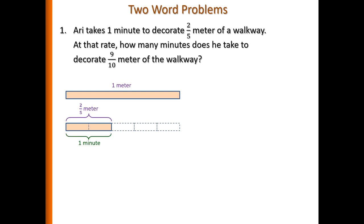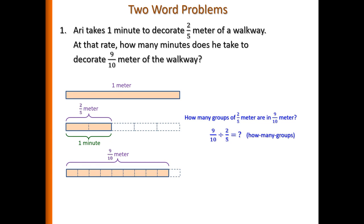We know that it takes one minute to decorate this two-fifths meter. And the question is asking how many minutes does it take to decorate the whole nine-tenths? So this is essentially asking how many groups of two-fifths meters are in nine-tenths of a meter. So this is the how many groups type of division, or we call it repeated subtraction. Because every two-fifths meter forms one group.